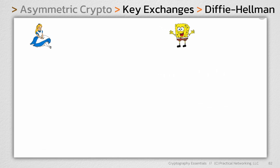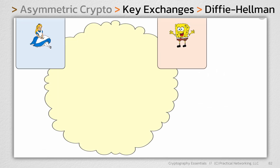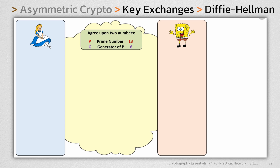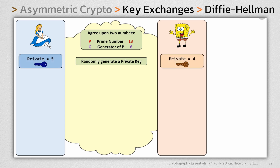We're going to do Diffie-Hellman together using Alice and Bob. All the math that Alice is going to do will be in a blue box, and all the math that Bob is going to do will be in an orange box. Anything that happens in the middle, everybody listening in on the wire knows about. First, they're going to agree upon two numbers: a prime number P and a generator G of that prime number. For our example, we're going to use 13 as our prime and 6 as our generator. Then Alice and Bob are each going to independently randomly generate a private key — Alice generating 5 and Bob generating 4.